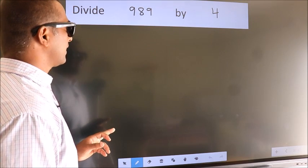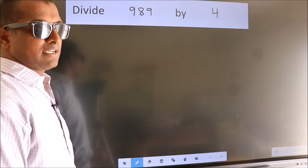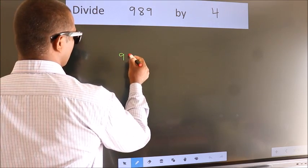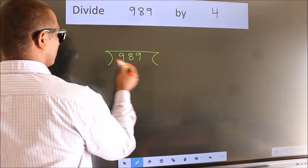Divide 989 by 4. To do this division, we should frame it in this way. 989 here, 4 here.